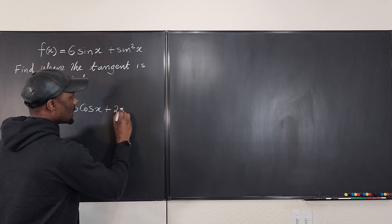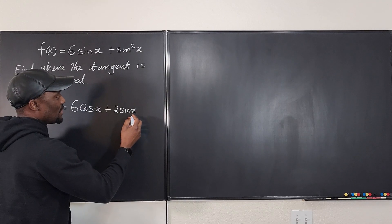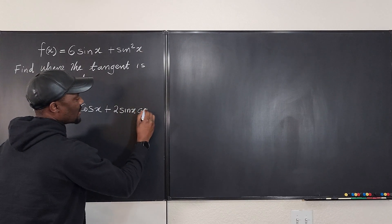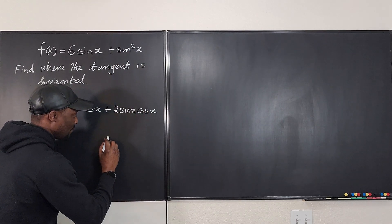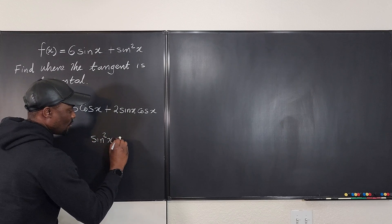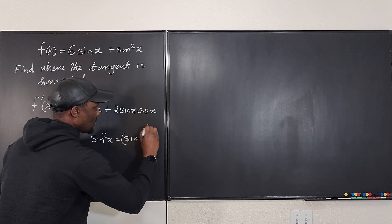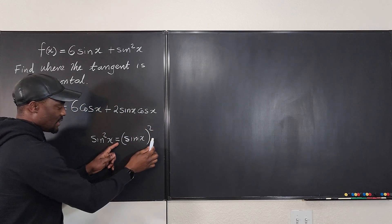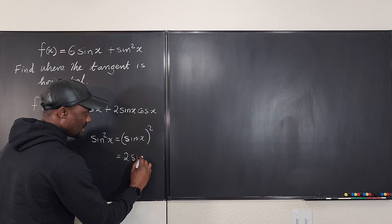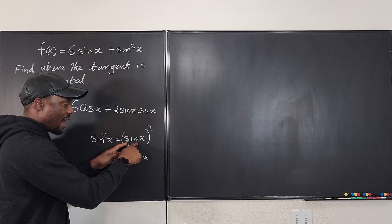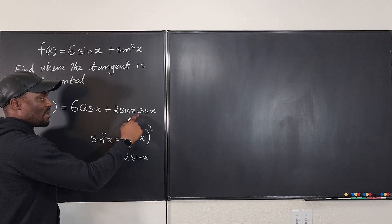It's going to be two times sine x, and then we take the derivative of sine x itself, which is going to be cosine x. You have to treat sine squared x to be the same thing as sine x, all squared. So when you take the derivative, you bring down the power and write sine x raised to power one, then differentiate the inside using the chain rule, which gives you cosine x. So that's how we came about this.